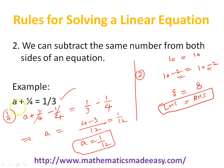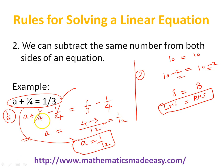We got the value of a. a was the variable in this equation, so the solution of this particular equation is a equal to 1 by 12. We applied the rule of subtracting the same number from both the left and the right hand sides. So we can subtract the same number from both sides of the equation.